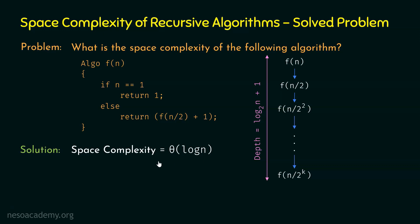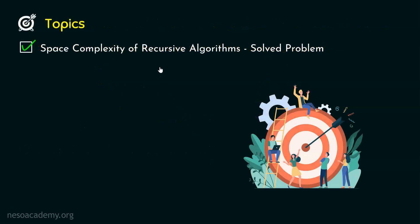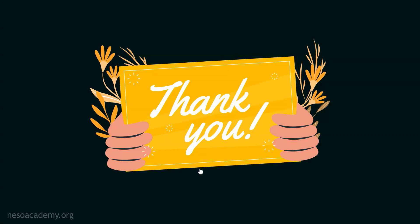We can eliminate the constant and the base in asymptotic notation, so the space complexity is Θ(log n). The space complexity is Θ(depth of recursion), and we represent it in asymptotic notation as Θ(log n). So the space complexity of this algorithm is Θ(log n). We are done with this problem and this presentation. Thank you for watching — I will see you in the next one.